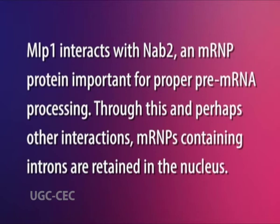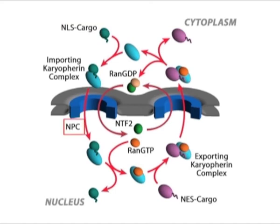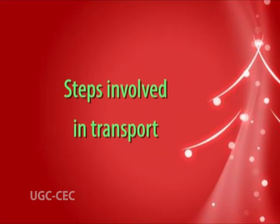Through this and perhaps other interactions, mRNPs containing introns are retained in the nucleus. Karyopherins function as transport receptors by recognizing and binding cargoes that carry nuclear transport signals and interact with NPCs. The mechanism whereby shuttling proteins are exported from the nucleus is best understood for those containing a leucine-rich NES, nuclear export signal.